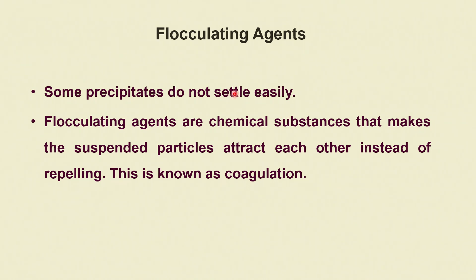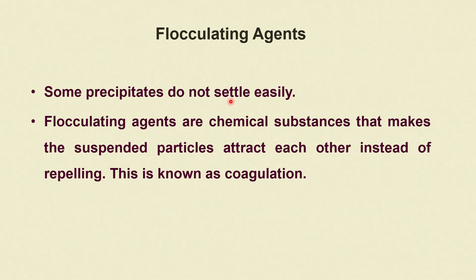It is important to add one or two ppm of flocculating agents, since some precipitates do not settle easily. Flocculating agents are chemical substances that make suspended particles attract each other electrostatically instead of repelling — this is also known as coagulation.